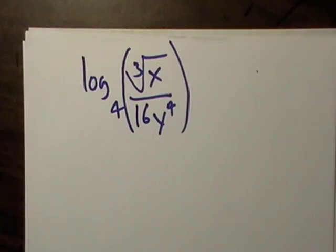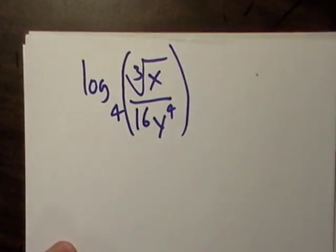All right, we're going to combine our product rule, our quotient rule, and our power rule, and we're going to start kind of really getting into what we're supposed to be doing.